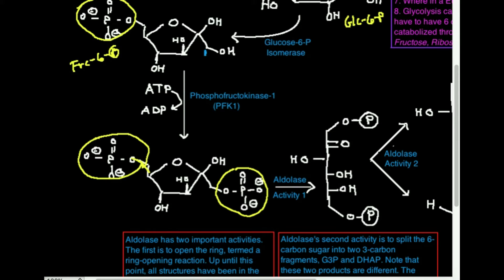So now instead of being fructose-6-phosphate, this one is termed fructose-1,6-bisphosphate — now there are two phosphates, one on the one and six positions. Where did that phosphate come from? It came from ATP, and when you transfer the phosphate onto this position right here, you get out ADP.